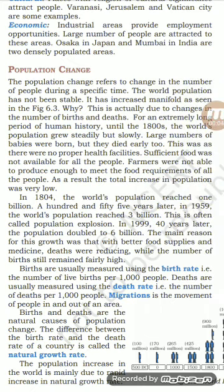Good morning, students. Today I will further continue the sixth chapter of Geography. In 1820, the world's population reached 1,150,000,000. In the early 1990s, the world's population reached 1,150,000,000. 1970 में विश्व की जनसंख्या तीन अरब पहुँच गई।